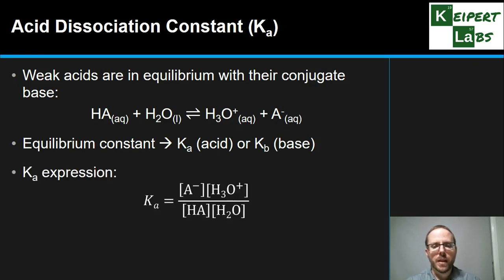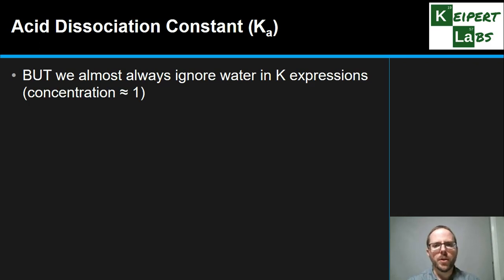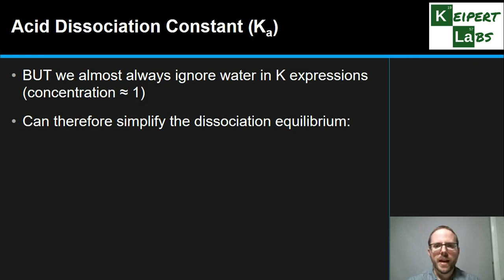So the Ka expression, the equilibrium expression looks like this: our products over reactants. So we've got A⁻ and our H₃O⁺ over HA and H₂O. But hopefully that last bit rings a bell for you, that remembering that in equilibrium expressions, we almost always ignore water because its concentration is effectively one. That is, any change up or down is so small compared with the amount of water that's around it. So we can remove it from the expression and make things simpler for ourselves. So that Ka expression, that equation, we can simplify.